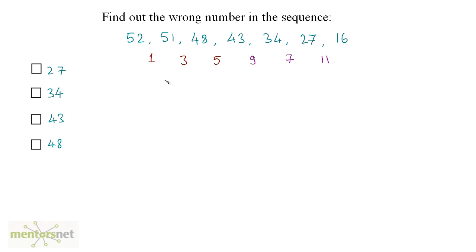So where is the sequence breaking up? Well, we have 1, 3, 5. Here, there should be 7, instead of 9. This means that because of this number, we subtract 9 from 43 to get 34. And this number has gone wrong. Hence, option B is the correct answer.